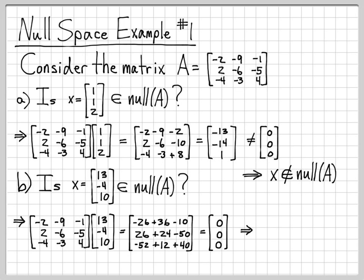So I took the matrix A. I multiplied it by x. I ended up with the all-zero vector. So by definition of the null space, that means that this vector x must be in the null space of A.